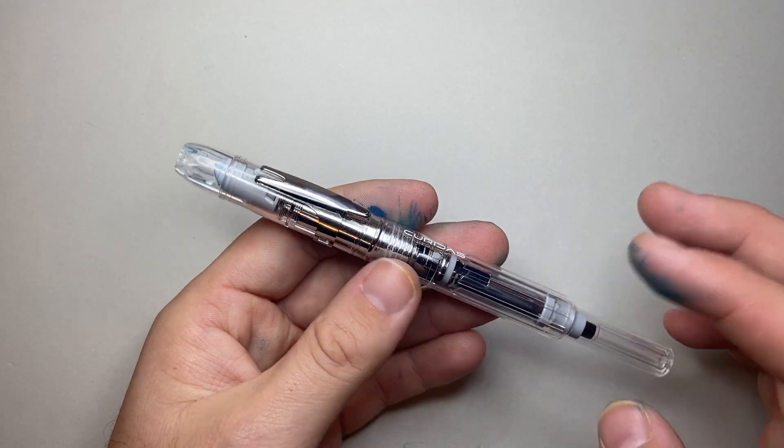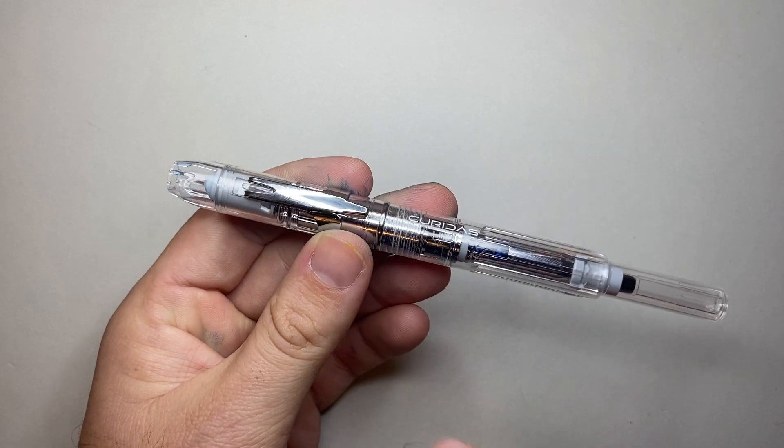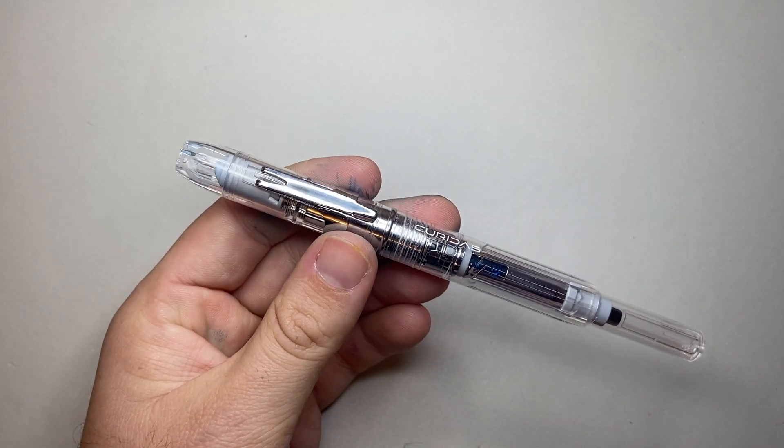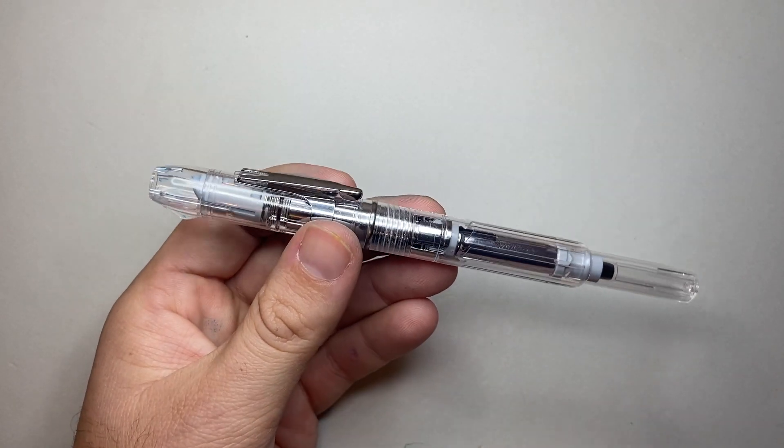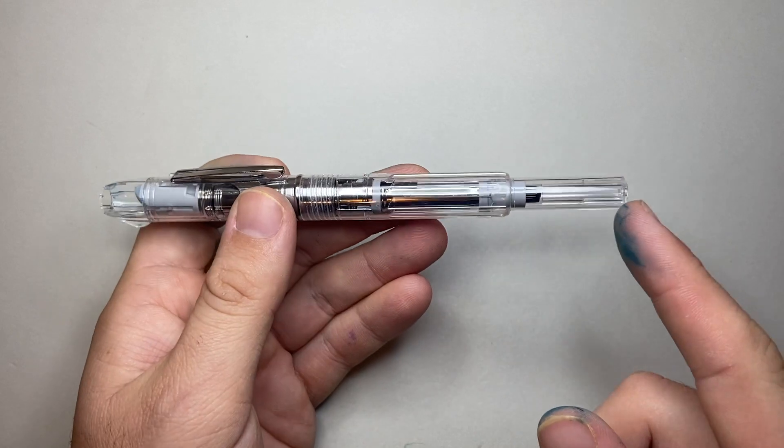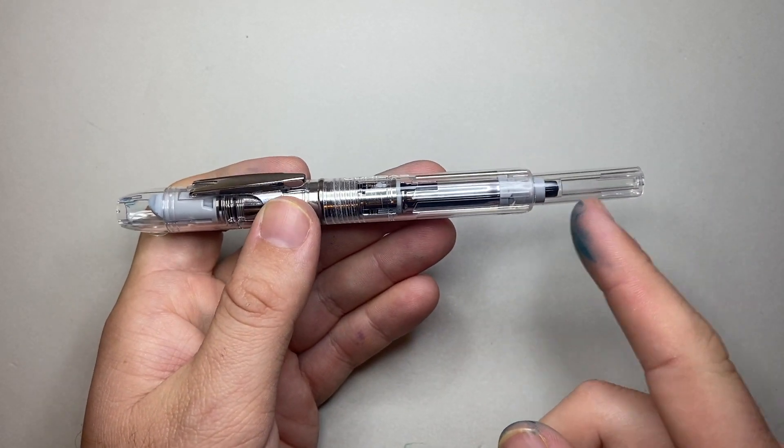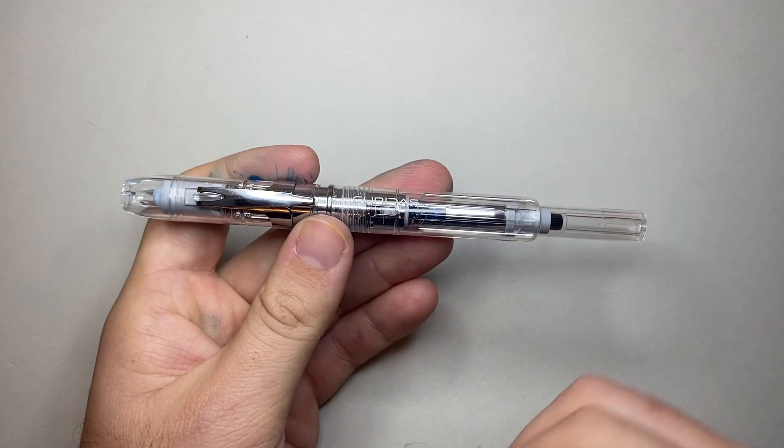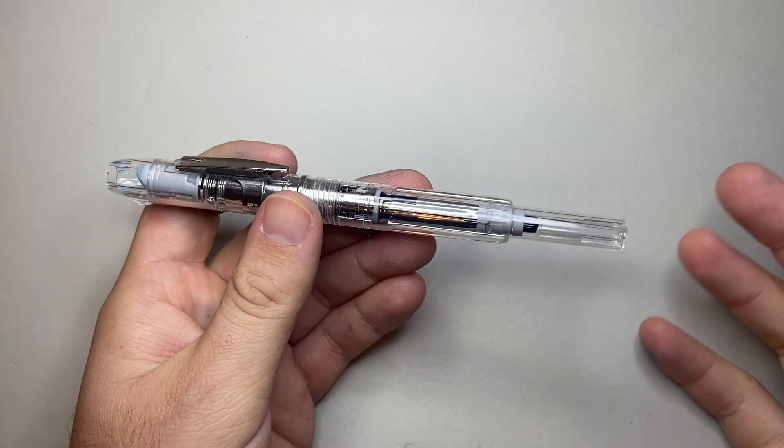But I think also the internal mechanisms of the Curitas and how it is put together, they're pretty complex, but quite clever. Aesthetically, it does nothing for me. Like, the knock there on the back is just ridiculous. Like, that is far too long, but the mechanism requires a certain length for the nib to protrude far enough out. So that's what it is.